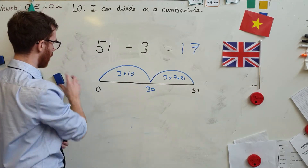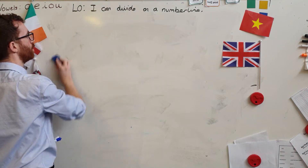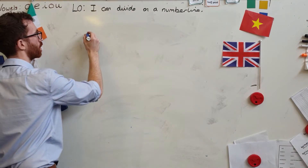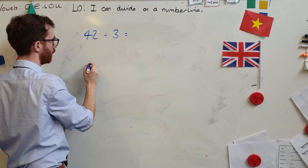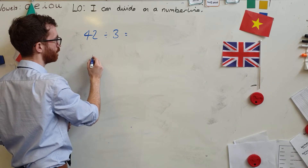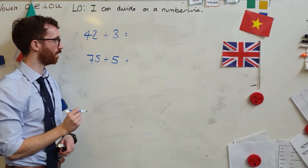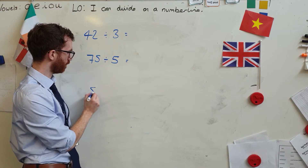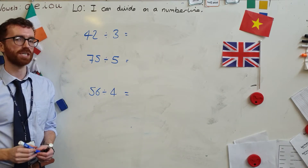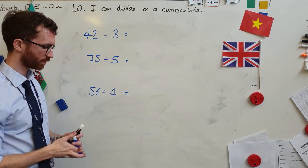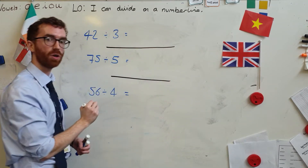Let's have a go at some questions for you to try, and then I'll run over them at the end. We'll have 42 divided by three, 75 divided by five, and one more: 56 divided by four. Those are the calculations I'd like you to do — off you go. Pause. You did a number line for all of them, yes? Good.